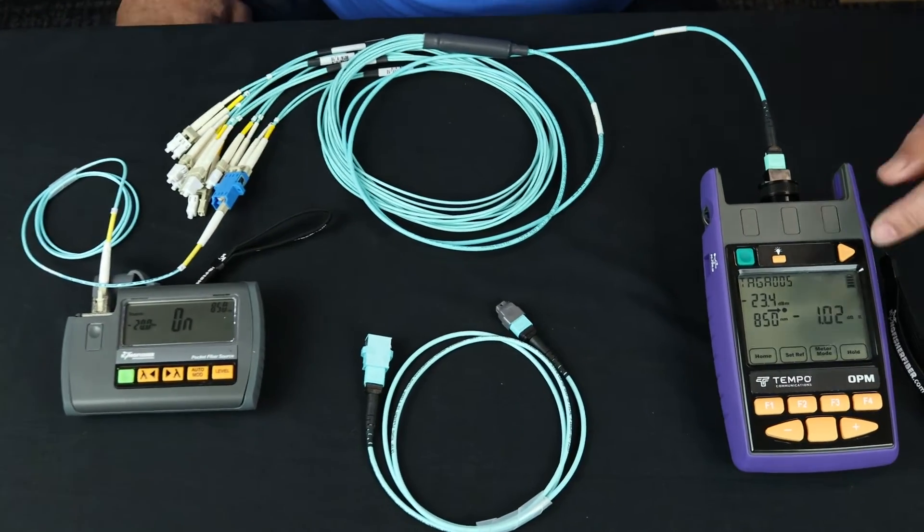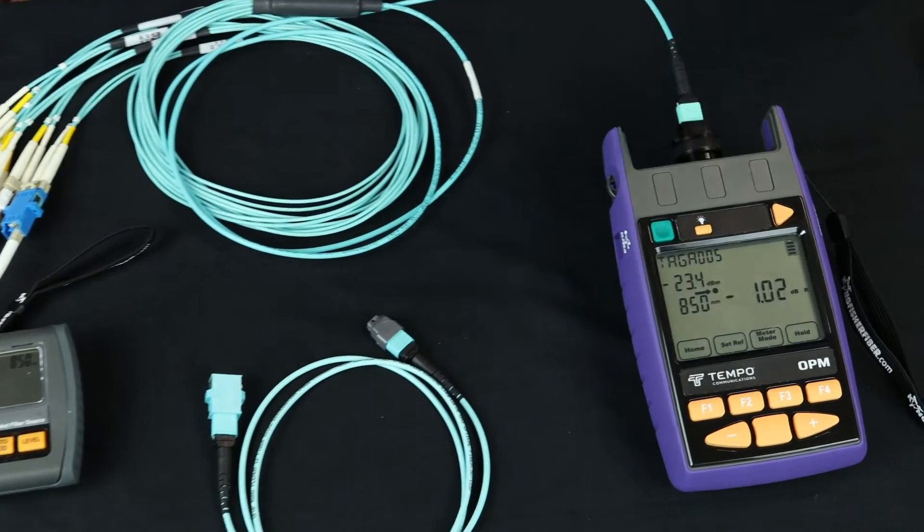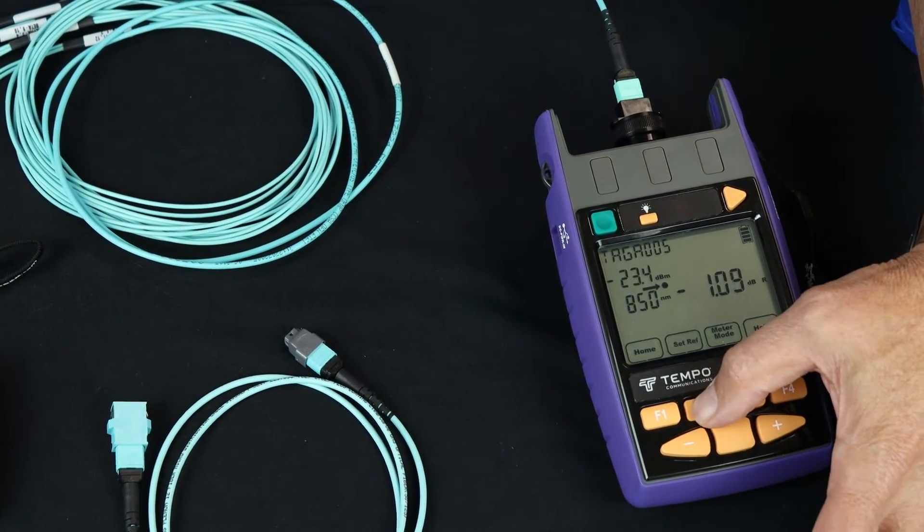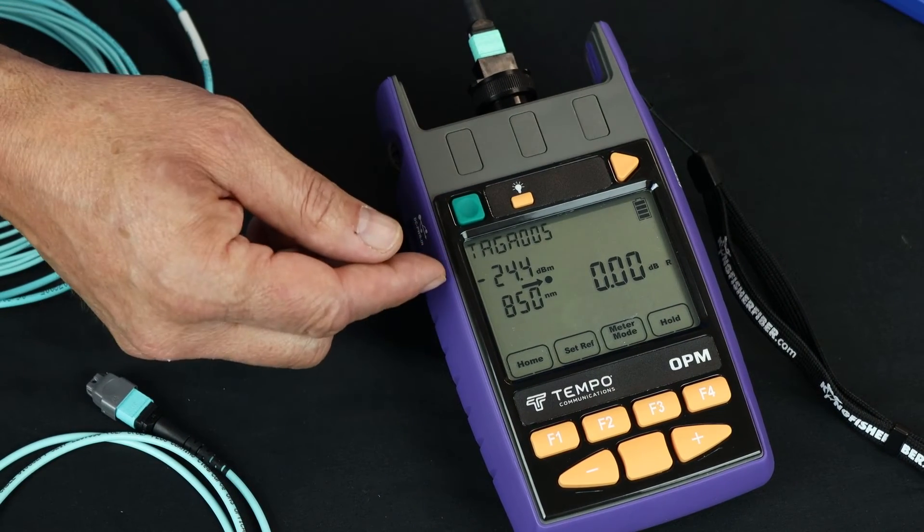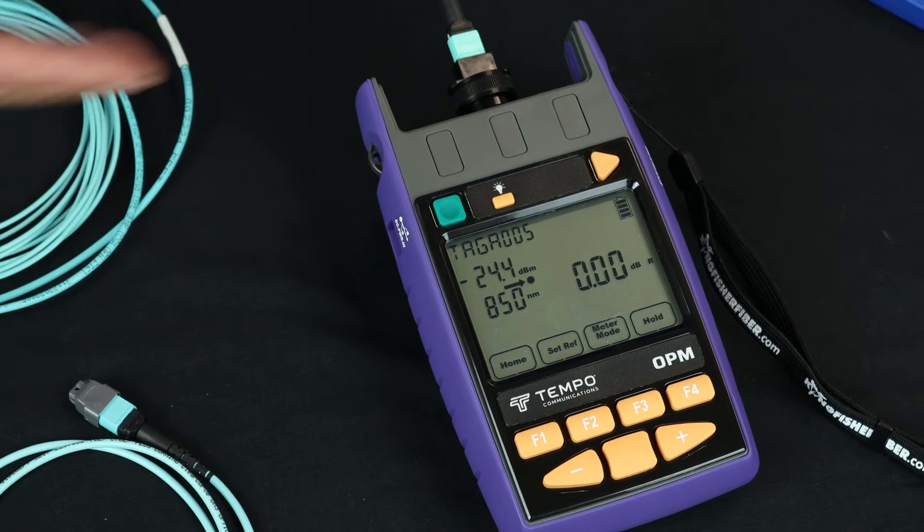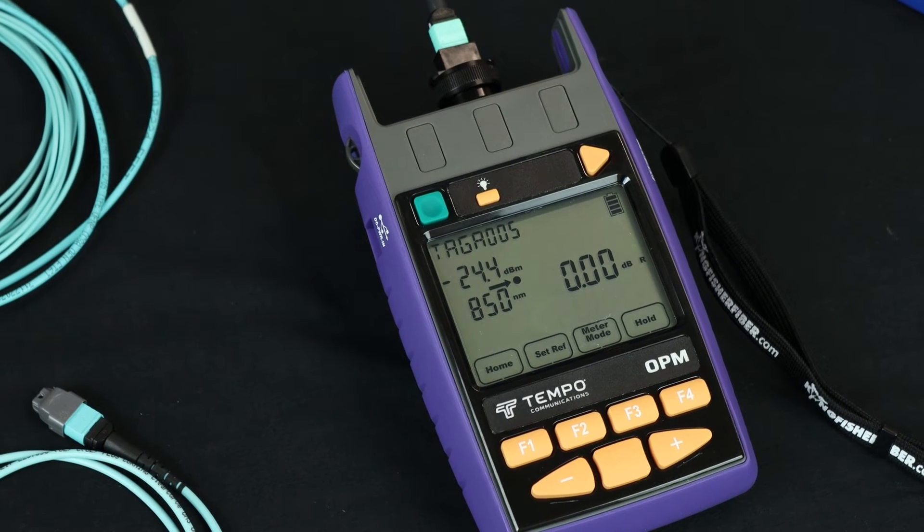So I'm going to go over here. This power meter already knows that I'm on 850 because it can talk to the light source. So I'm going to set reference and it sees that I've got just about minus 2.5 dBm coming in and I've referenced that condition out.